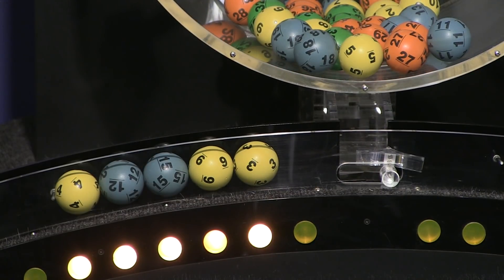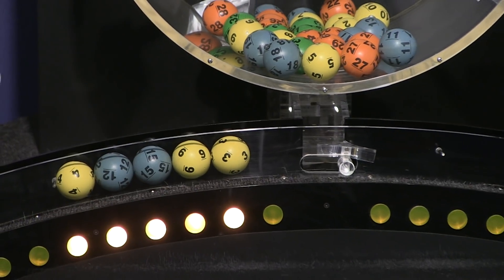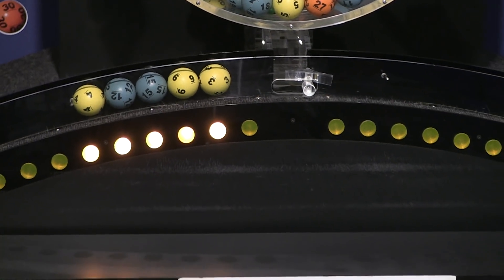Once again, the winning Mass Cash numbers for Thursday, May 2nd are 3, 4, 9, 12, and 15.